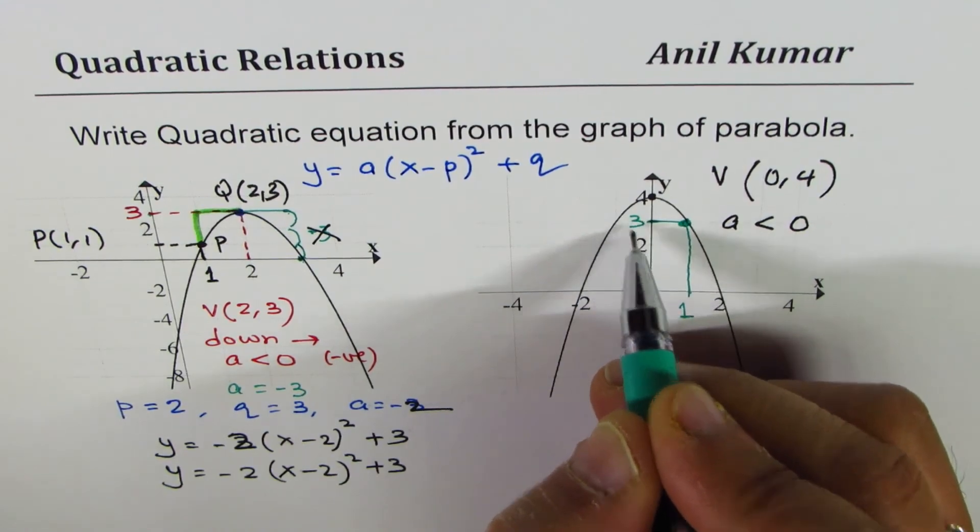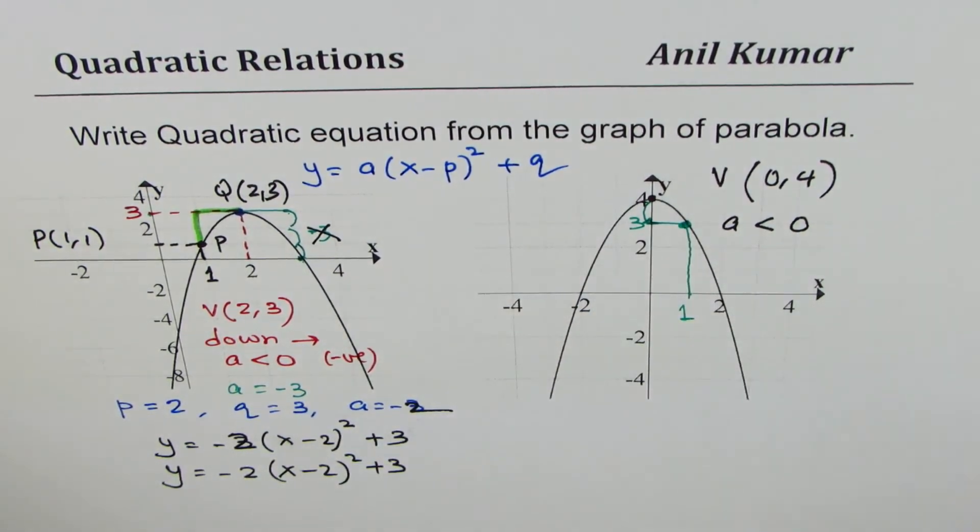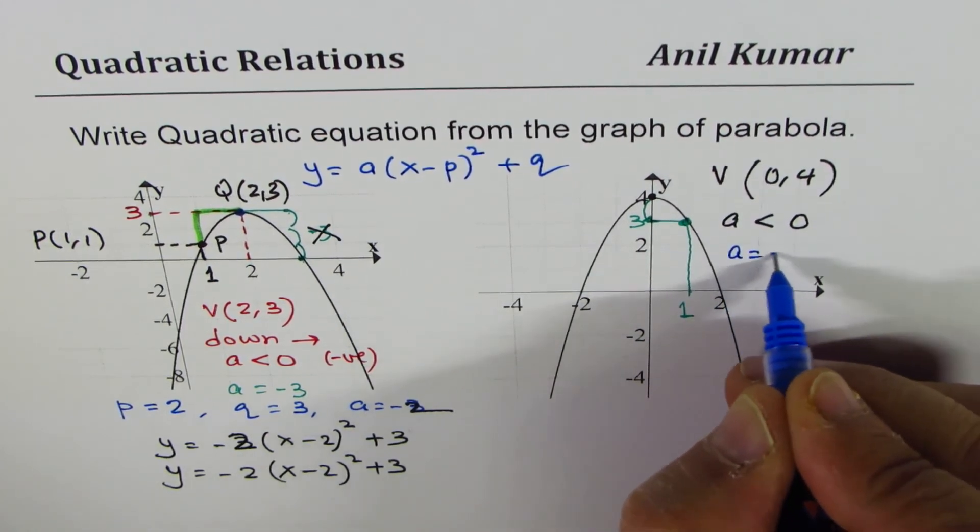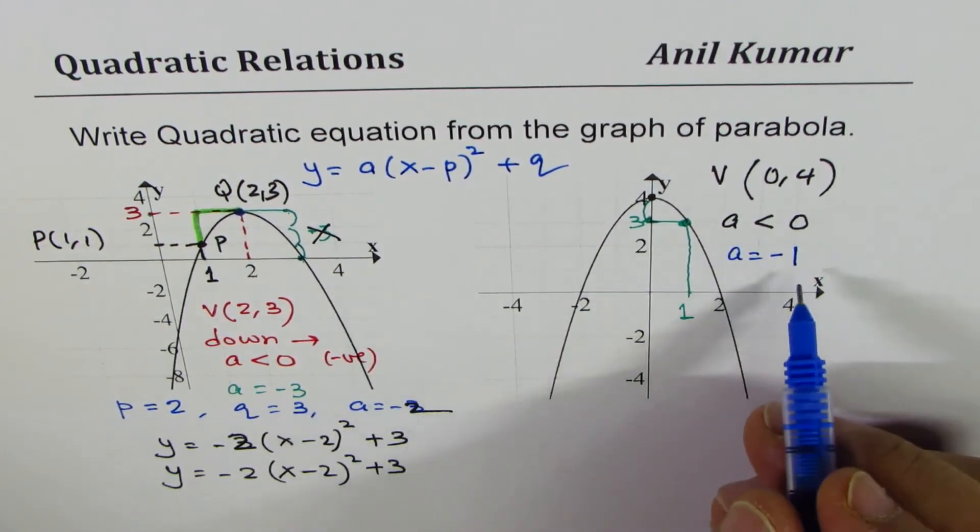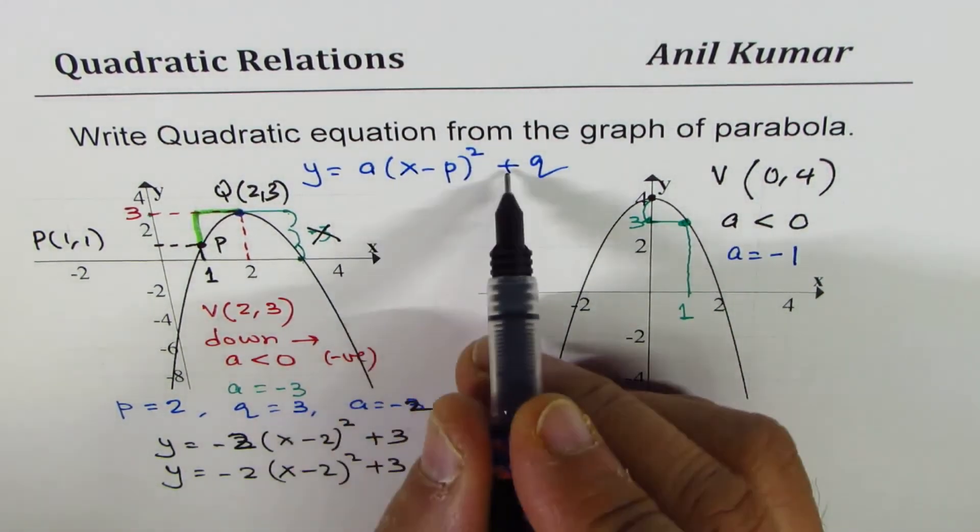So we have actually moved down by 1 unit, and therefore I could write A equals to minus 1. So A is written as minus 1 in this particular graph. Putting all these values here in the equation, we get Y equals to minus, since it is opening downwards, with steps of 1, 3, 5, 7.